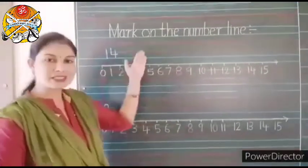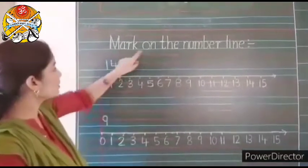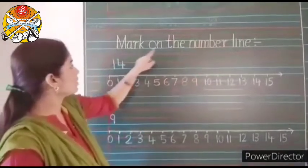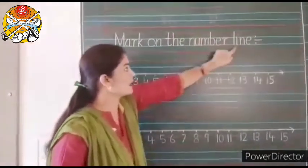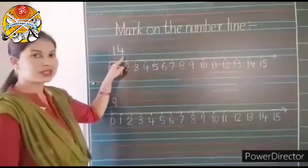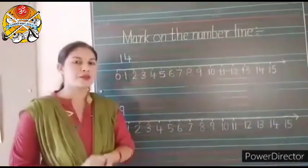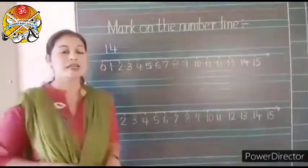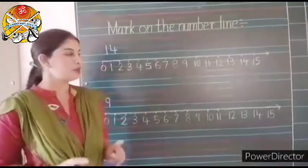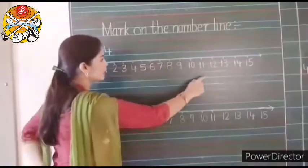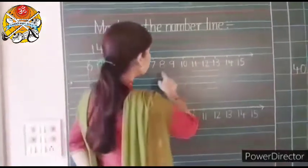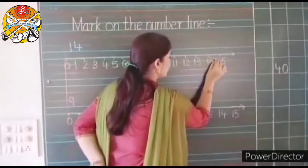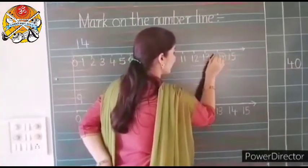See children what is written here? Let's read it. Mark on the number line. See numeral 14 is written here. So what we have to do? We have to find out the numeral 14 on this number line and then encircle it. So tell me where is numeral 14? See carefully. Yes. This is numeral 14. So we will encircle it like this.